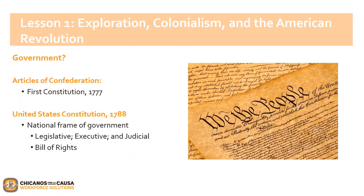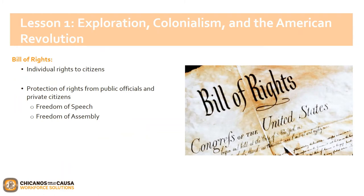The principles of the U.S. Constitution are based on a centralized government which ensures that not one branch of government overpowers the other. The U.S. Constitution also gave way to the Bill of Rights. The Bill of Rights are the first ten amendments to the U.S. Constitution. These are individual rights given to citizens to protect their freedoms, including freedom of speech and freedom of assembly.